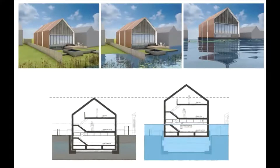Due to this, the house can remain close to the ground and retain its original appearance under normal circumstances, but rise and float on the water's surface when flooding occurs, then settle back to its original position as the water level decreases.